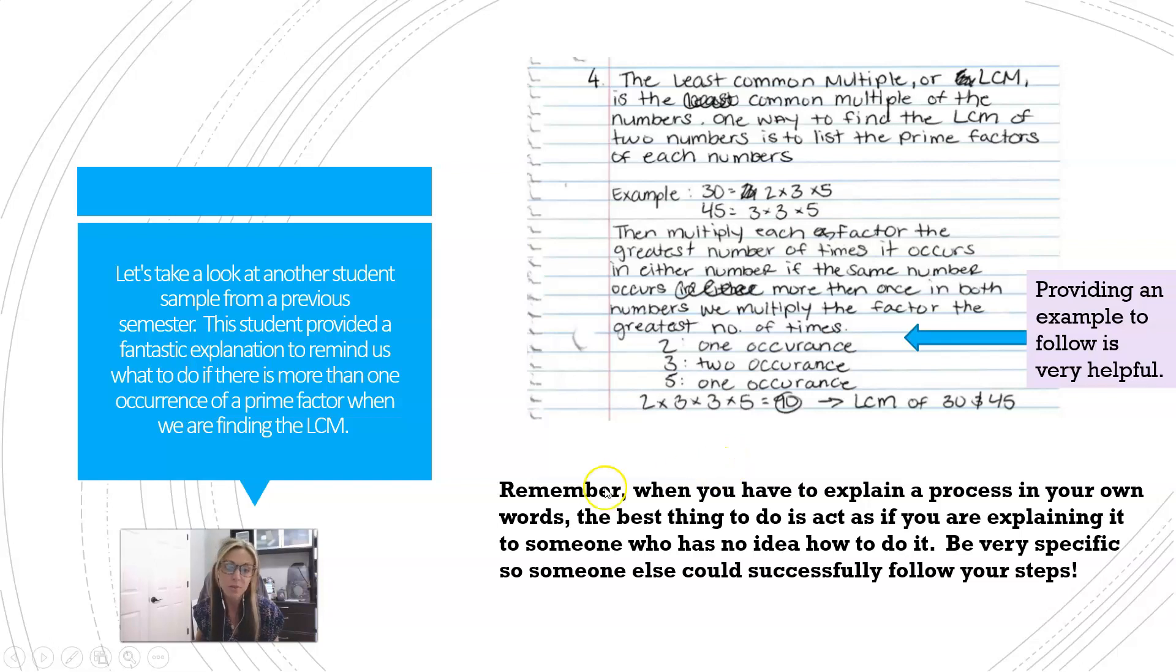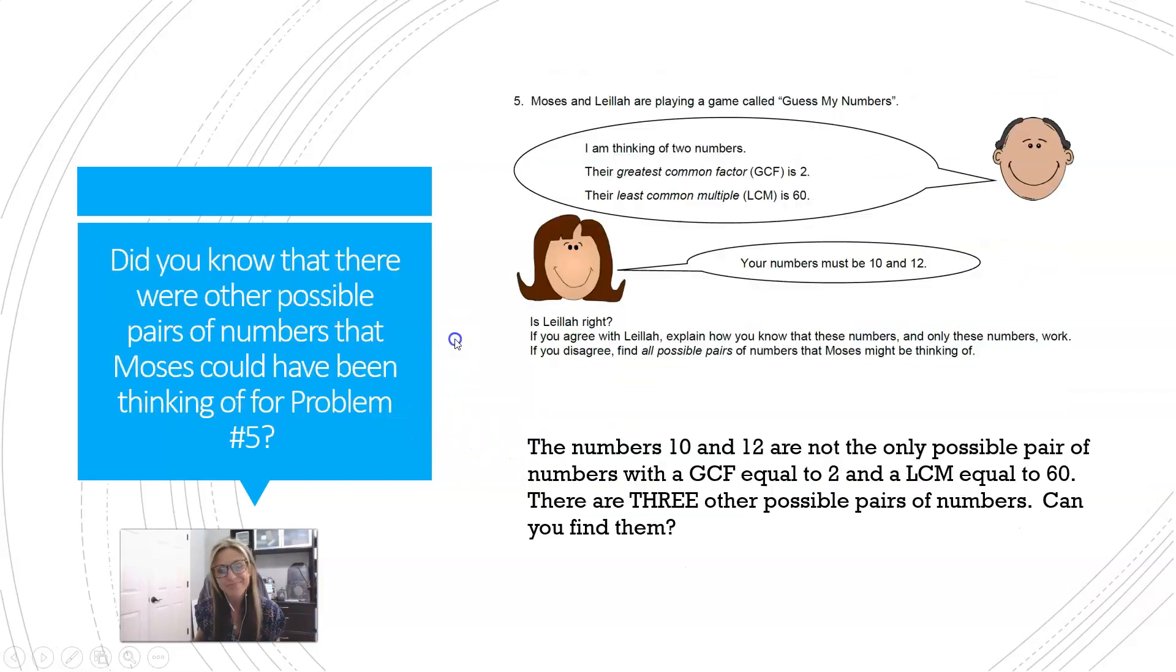Now let's take a look at question five: Moses and Leila were supposed to guess Moses's numbers. Before I talk about the GCF and the LCM and all the mathematics of this question, let's relate it to something that might help us get a better grasp of what we're supposed to be doing.